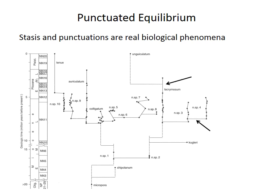Instead, stasis and rapid change, or punctuation, seems to be a real phenomenon called punctuated equilibrium. Punctuated equilibrium was first recognized with fossils and has become a really important aspect of evolutionary theory since then.